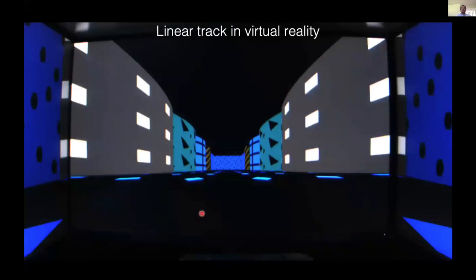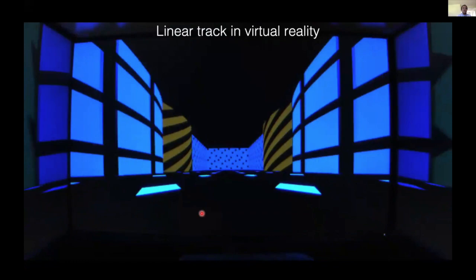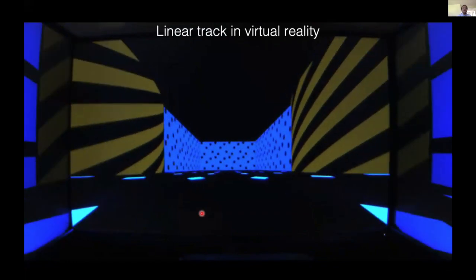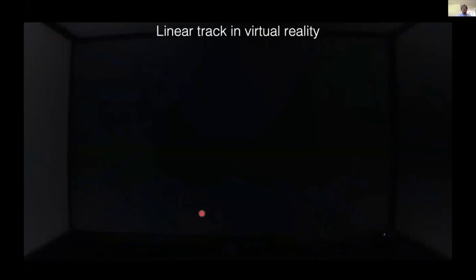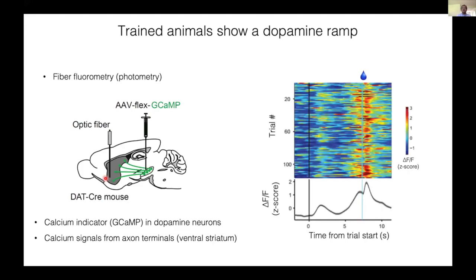To conduct these experiments, we used a virtual reality and head-fixed mouse. The mice were presented with the scene passively and received reward at the final location around here. We first measured the activity of dopamine neurons using fiber photometry. Calcium indicator GCaMP6 was expressed in dopamine neurons and axonal calcium signals were monitored through an optical fiber implanted in the ventral striatum. After training, the calcium signals showed ramping activity before receiving a reward.